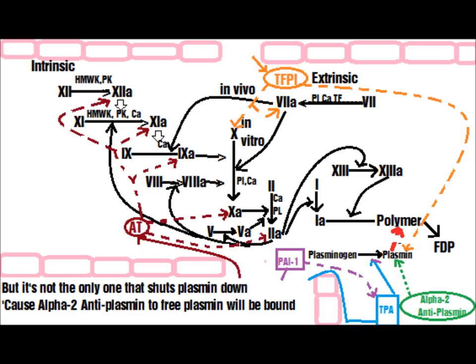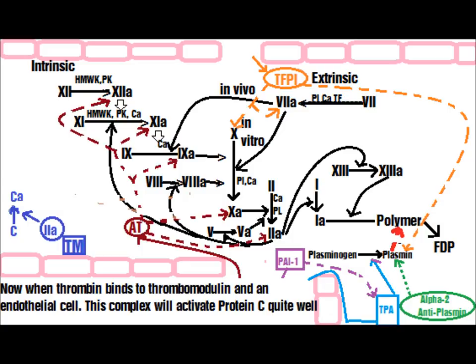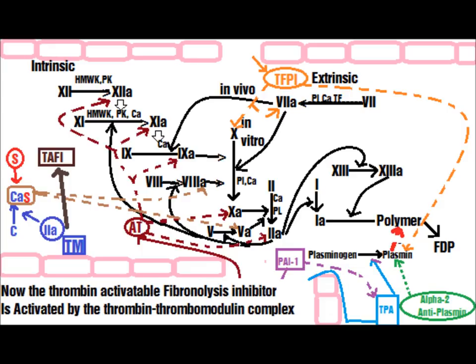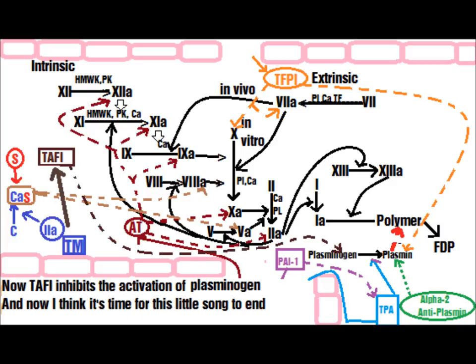When thrombin binds to thrombomodulin on endothelial cells, this complex activates Protein C. Activated Protein C binds to Protein S, and Factors 5A and 8A will be inactivated by the Protein C/S complex. The thrombin-activatable fibrinolysis inhibitor (TAFI) is activated by the thrombomodulin complex — TAFI inhibits activation of plasmin. And now it's time for this song to end.